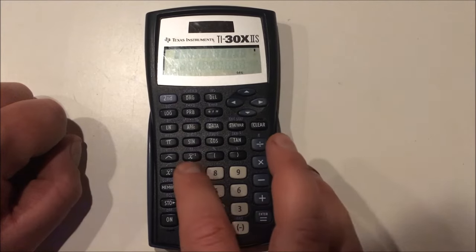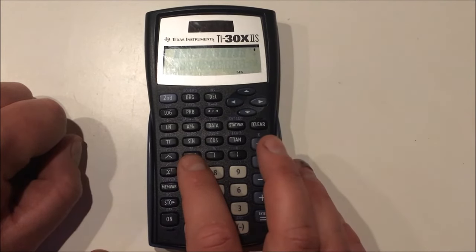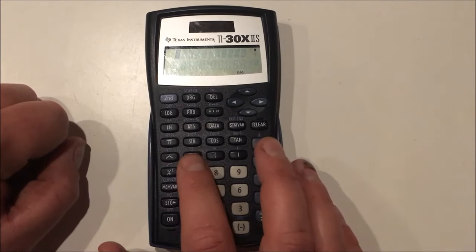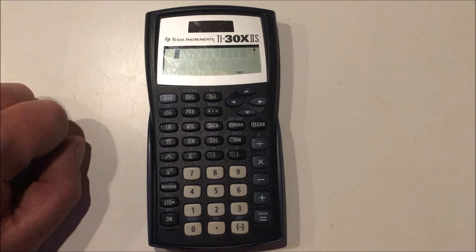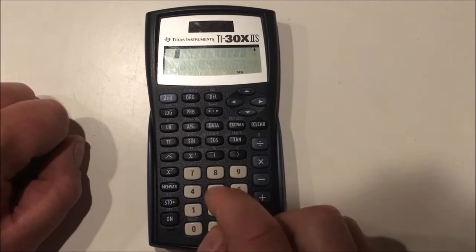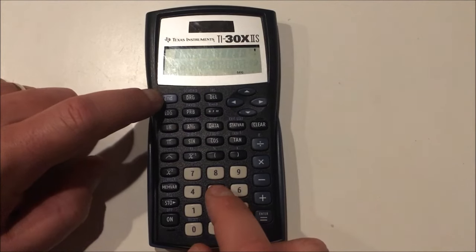Now, ee is shorthand for times 10 to the, which is really nice, because it actually saves you time. So if I want to do 5 times 10 to the 6 with this set of buttons, I do 5, second, x negative 1. You see a little e there, which means times 10 to the, and then I press the exponent I want for 10, 6.